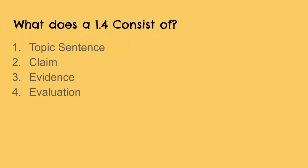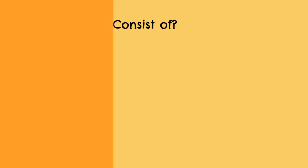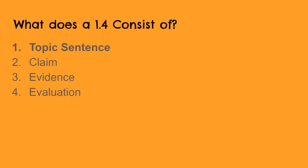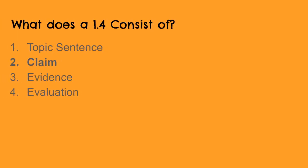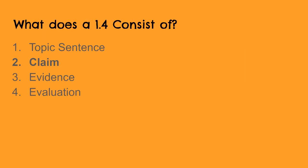It consists of four different parts. The first part is going to be the topic sentence. The topic sentence is when you talk about who or what this entire paragraph is going to be about. Next you're going to make a claim. You are going to use the evidence that you've been given in order to make a claim or come up with a stance on an idea that the topic sentence is based off of.